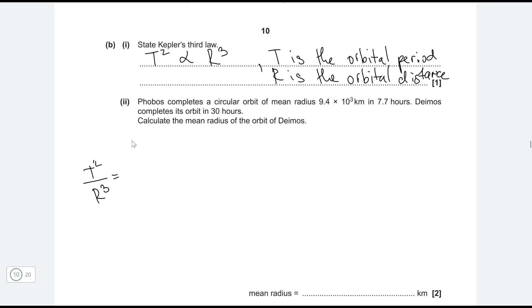In fact, let's just rub this top bit out and let's just say that t squared over r cubed is equal to a constant.